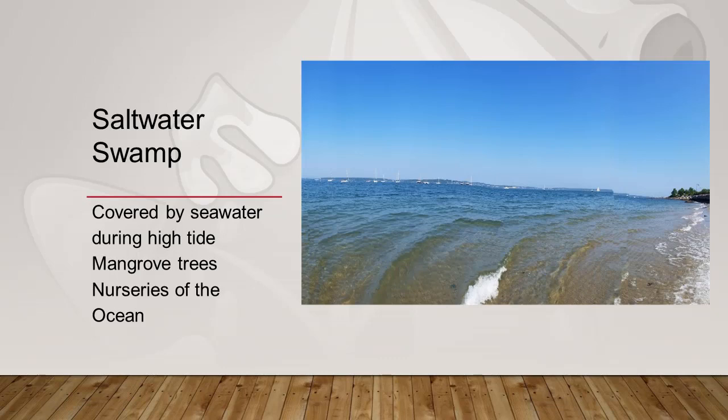Like freshwater swamps, saltwater swamps have an array of diverse wildlife. Some ocean species spawn and lay their eggs in the saltwater swamp. Other species spawn in the open ocean and the young find their way to the swamps and live there until they mature. For this reason, saltwater swamps are often called the nurseries of the ocean.